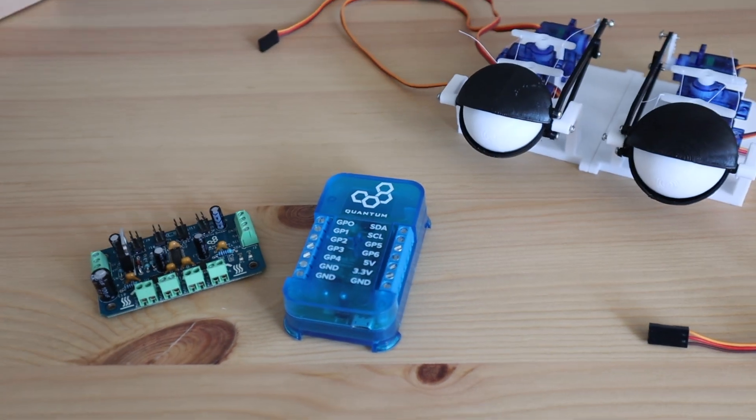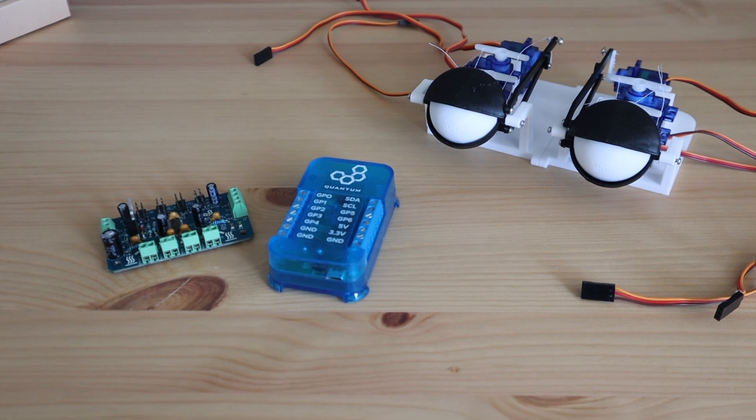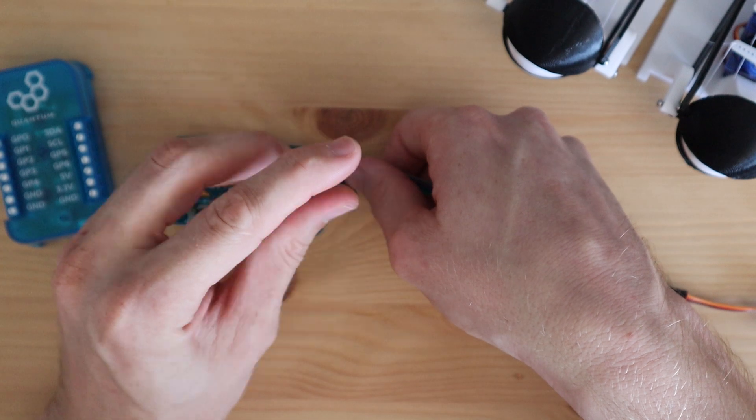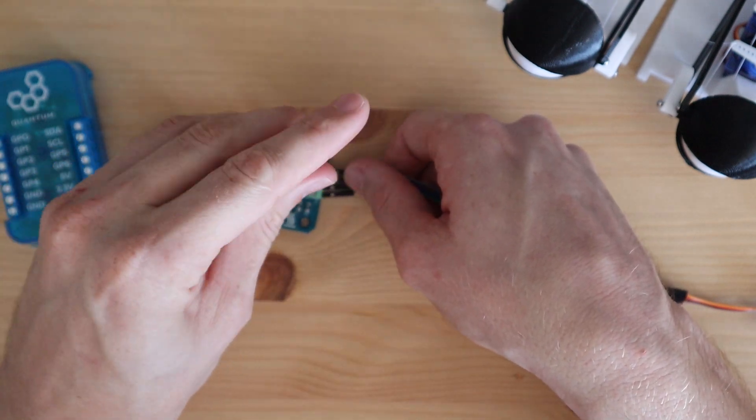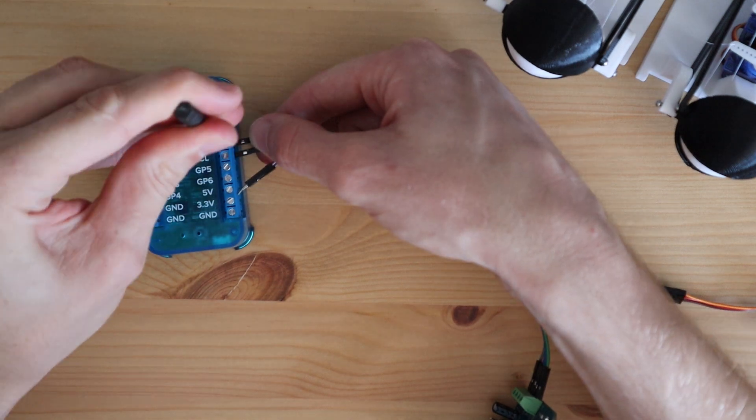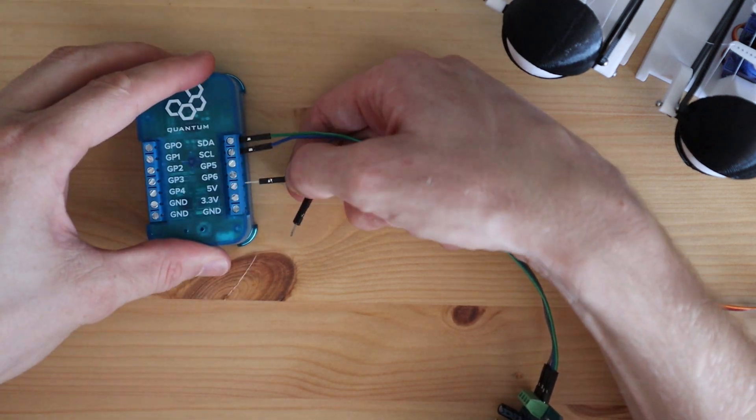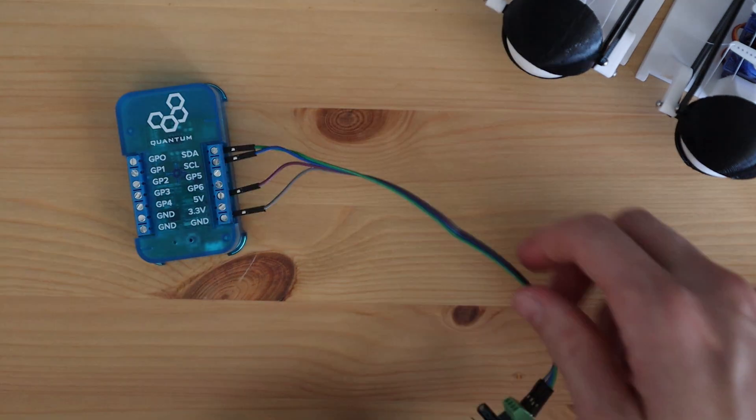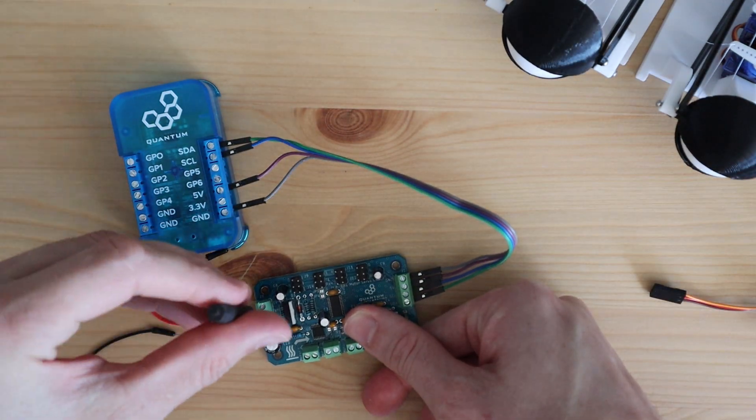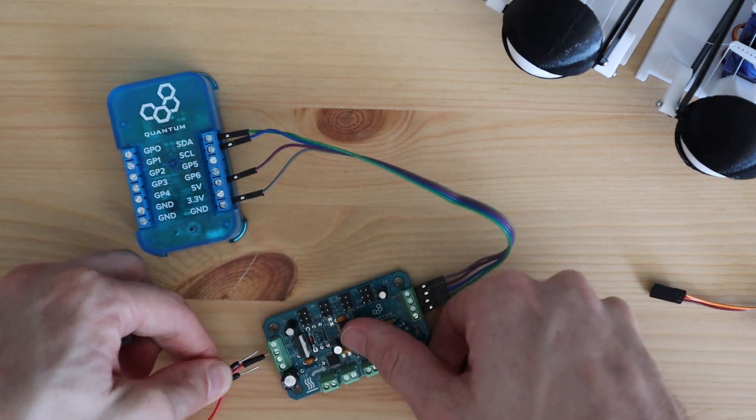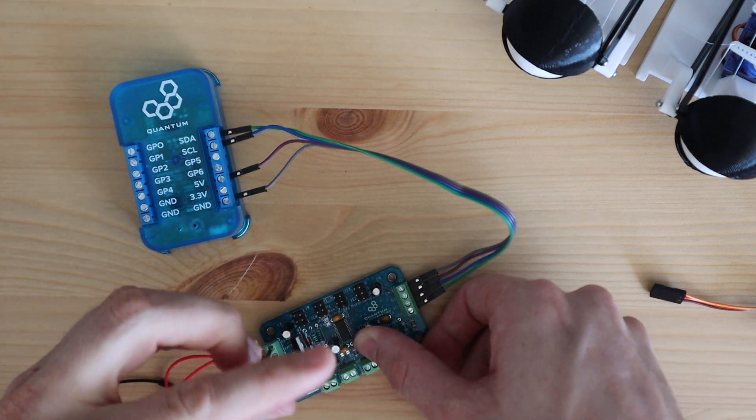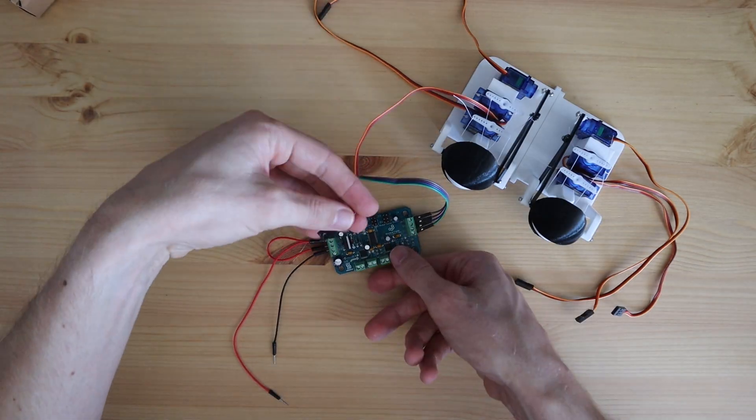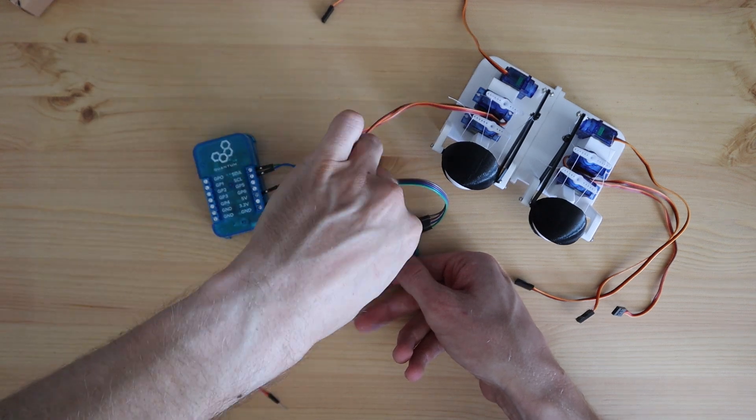With that done, we can pair up our driver and builder base and plug in our servos. As mentioned earlier, the driver uses the I2C interface. So we just need to make connections to 5 volts, ground, SCL and SDA. The builder base is going to get its power through the servo driver board. So we only need to supply power to the driver board. Then just plug the servos into the driver board and we can move on to programming it.